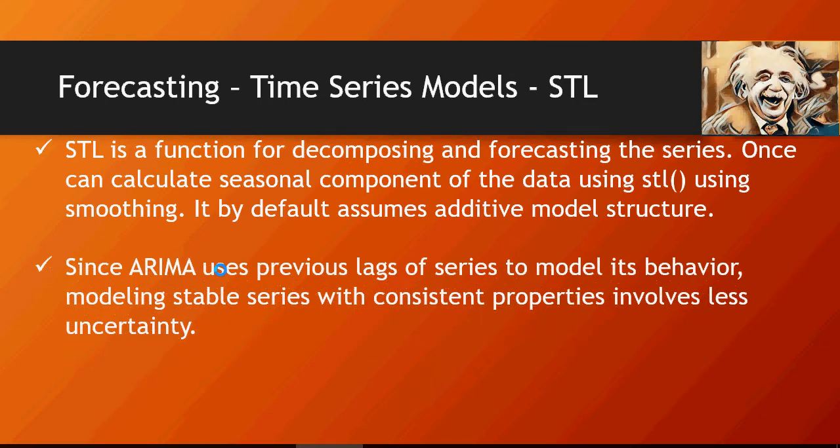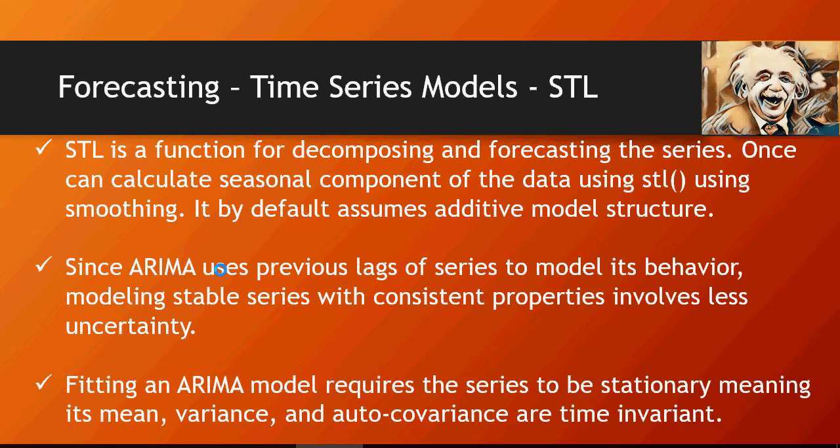And then ARIMA model uses previous lags of series in order to understand and for the future of forecasting. And that is why it is consistent. It is more consistent than other models. And this is fitting an ARIMA model requires a stationary meaning on mean variance and auto variance. So I am going to talk about moving averages, how we can understand and better predict using ARIMA model.